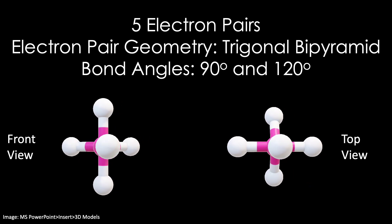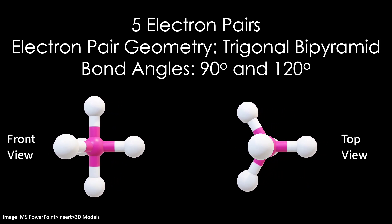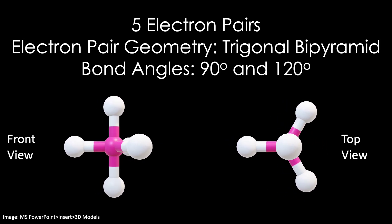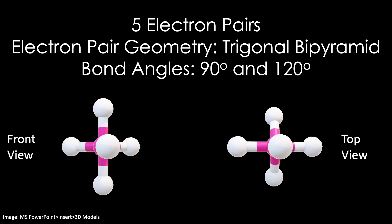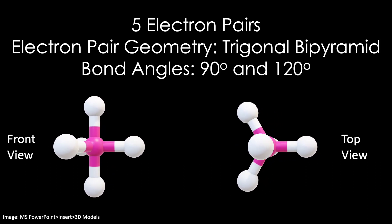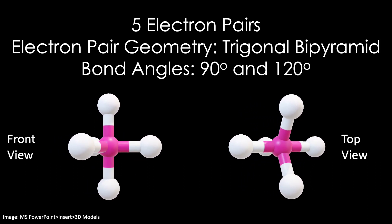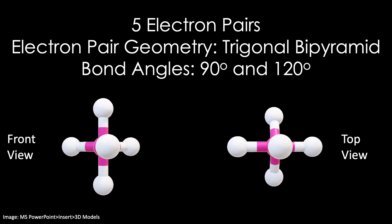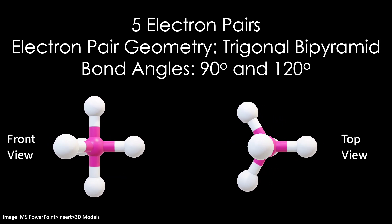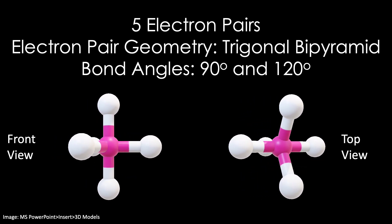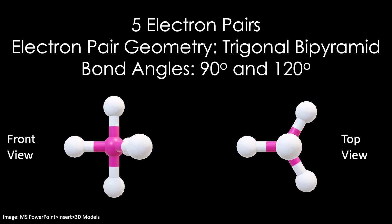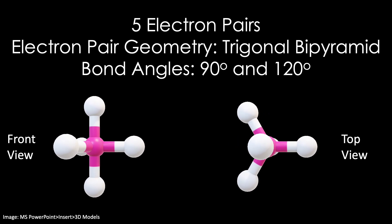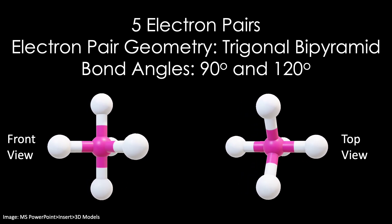For five electron pairs, the optimum electron pair geometry is trigonal bipyramidal. In the front view on the left, you can imagine two pyramids fused in the middle plane. There is a bond angle of 90 degrees going from the top atom to the middle plane, which you can see in the front view on the left. Other bond angles of 120 degrees run along the middle three atoms, visible in the top view on the right. This top view looks like the trigonal planar geometry we saw earlier.